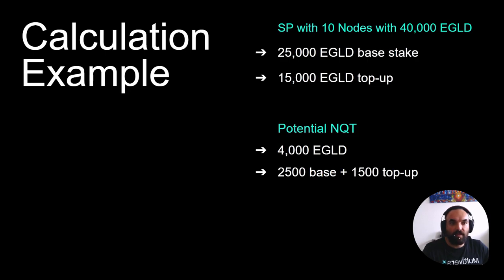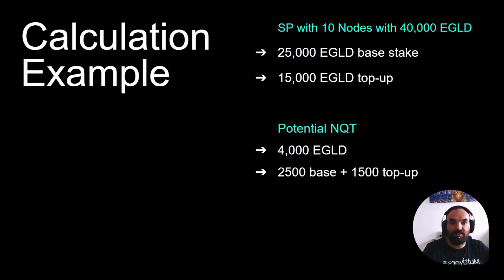In this example, we are taking a virtual staking provider which has 40,000 EGLD stake and is running 10 validator nodes. Out of all of this stake, 25,000 EGLD is the base stake required to run all these validator nodes, and 15,000 EGLD is the top-up from delegators. So in our case, the staking provider NQT would be 4,000 EGLD — calculated by dividing the overall 40,000 EGLD by the number of nodes (10). Very easy to understand.